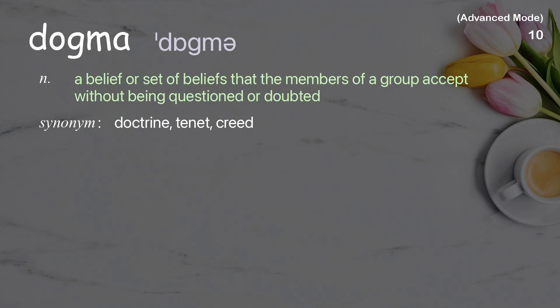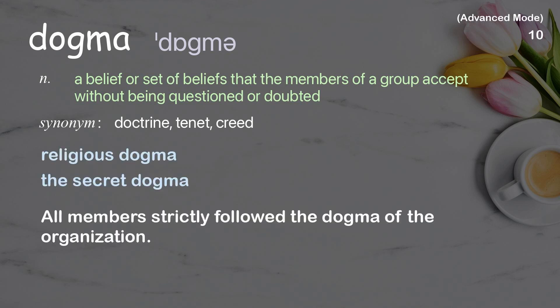Dogma: a belief or set of beliefs that the members of a group accept without being questioned or doubted. Examples: religious dogma; the secret dogma. All members strictly followed the dogma of the organization.